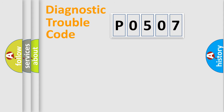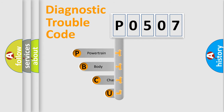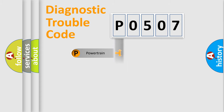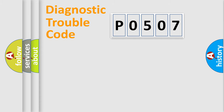First, let's look at the history of diagnostic fault code composition according to the OBD-II protocol, which is unified for all automakers since 2000. We divide the electrical system of the automobile into four basic units: Powertrain, Body, Chassis, and Network.